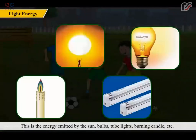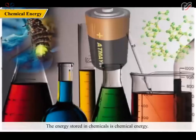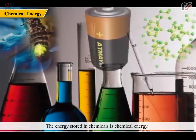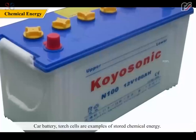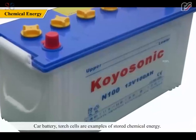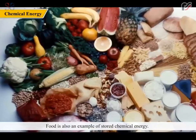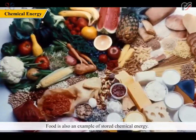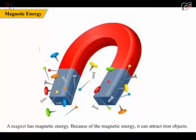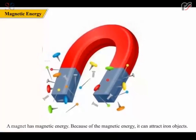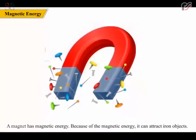Light energy is emitted by the sun, buds, tube lights, burning candle, etc. Because of this form of energy, we are able to see. The energy stored in chemicals is chemical energy. Car batteries and dry cells are examples of stored chemical energy. Food is also an example of stored chemical energy. A magnet has magnetic energy; because of magnetic energy, it can attract iron objects.